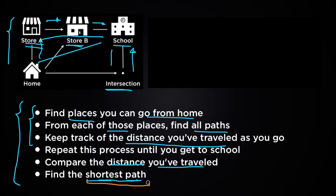That's the result we were looking for, and this is a good example of what an algorithm is. Basically, you have a problem you want to solve — in this case, finding the shortest path from home to school — and then you have a set of systematic instructions for solving that problem.